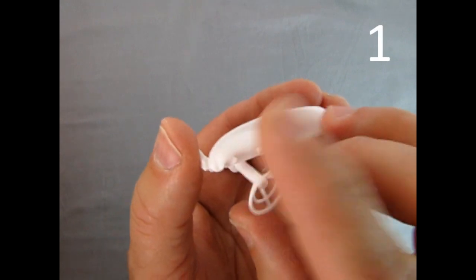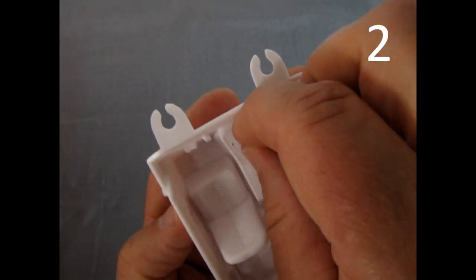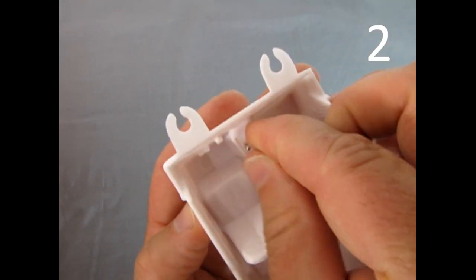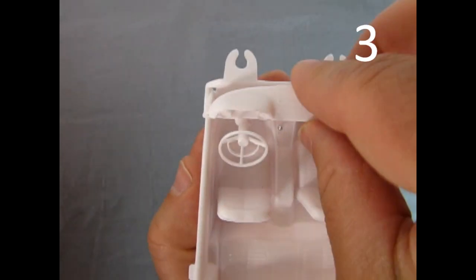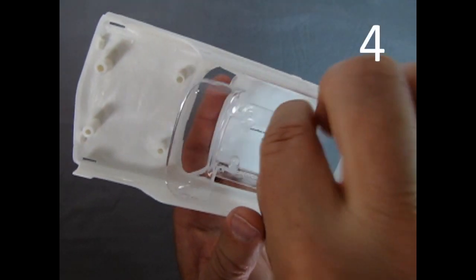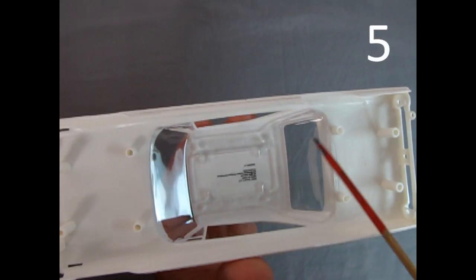Push the steering wheel into the dashboard. Put the shift lever into the hole in the center console. Drop the dashboard into the interior tub. Set the windows into the roof. Locate the finished interior to these four posts, just like this.